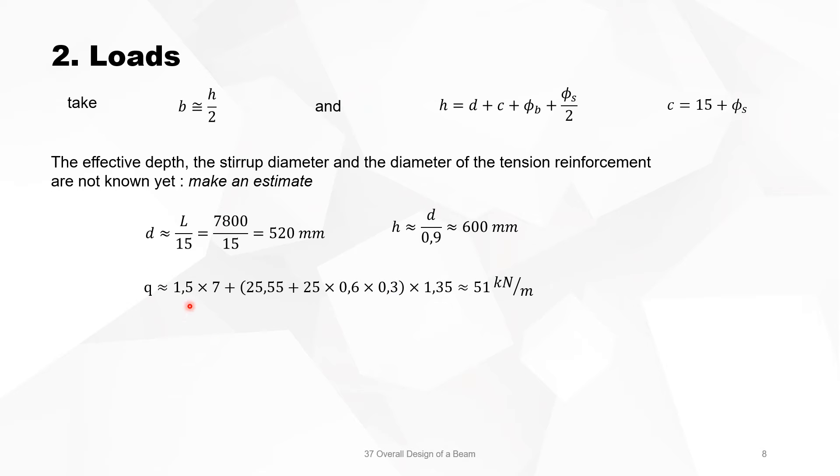The load is then on the beam with this proper weight, H is 600 and B is 300. We have 51 kilonewton per meter. The bending moment, maximum bending moment is then 388 kilonewton meter. And from the maximum bending moment, we will roughly estimate reinforcement. So we use 0.9D as a lever arm. Remember, this is just an estimate, nothing more, it's not a calculation. It's 1906, so we know a diameter 25 will be fine.